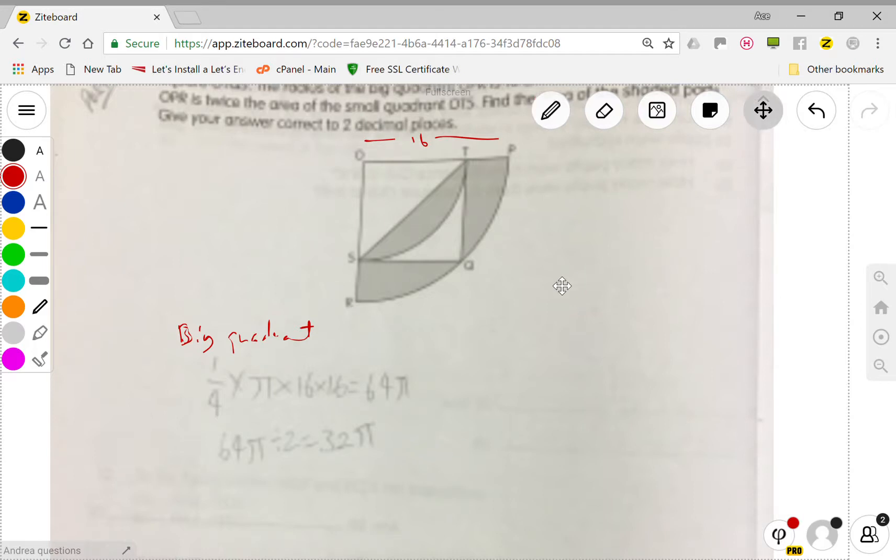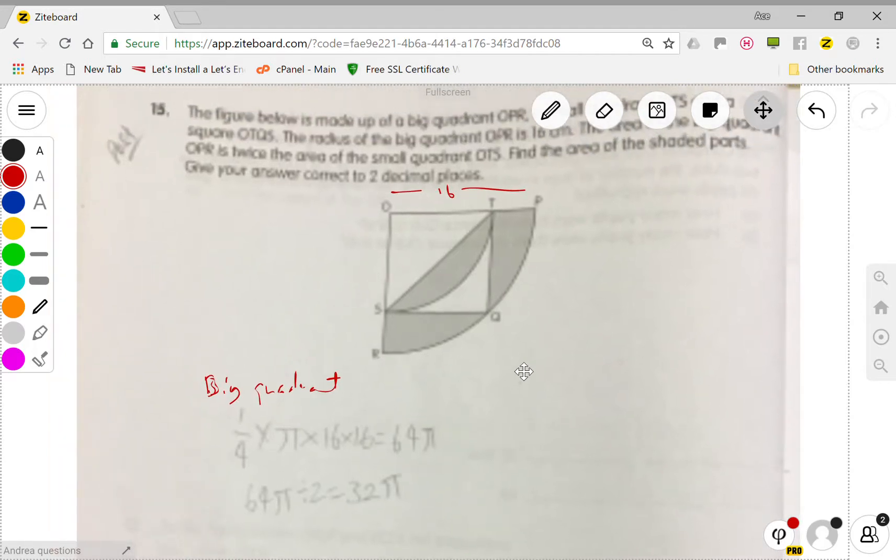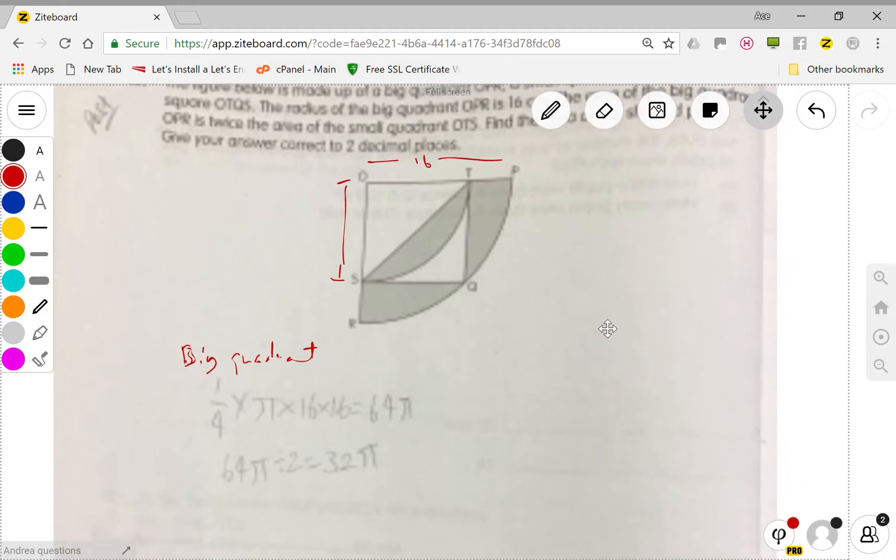Okay, I think for this question the key thing is we need to find the radius. We need to find what is this part. So we know that the area is 32π, so one quarter times π times r times r equals 32π.